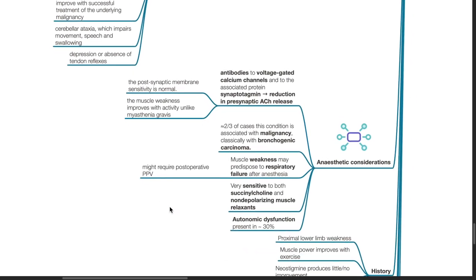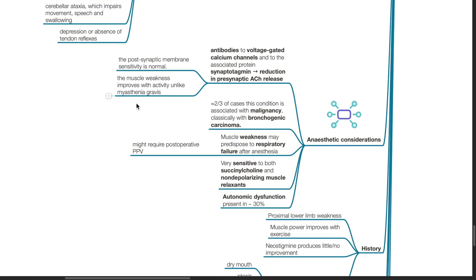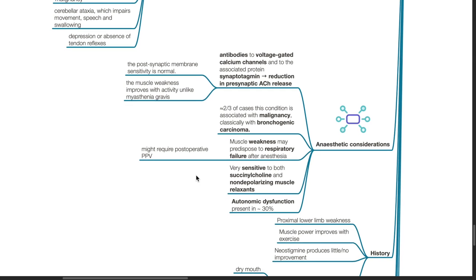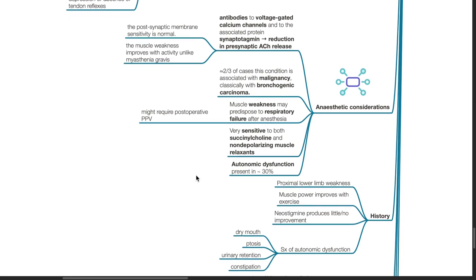Important anesthetic considerations. Due to the pathophysiology of LEMS, muscle weakness improves with activity. Unlike in myasthenia gravis, two-thirds of cases of LEMS is associated with malignancy and this should be investigated. Muscle weakness may predispose to respiratory failure after anesthesia in patients with LEMS and they may require post-operative mechanical ventilation. Patients with LEMS are very sensitive to both succinylcholine and non-depolarizing muscle relaxants. Autonomic dysfunction may be present in up to 30% of patients.